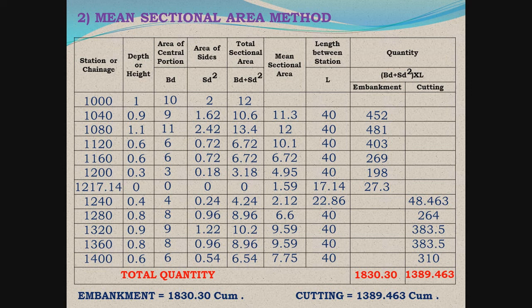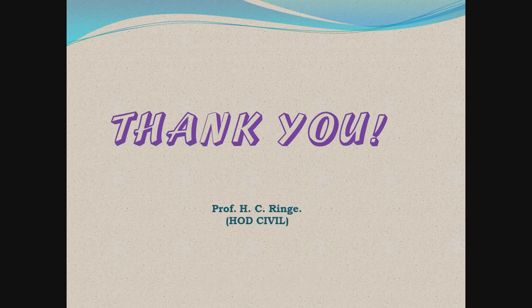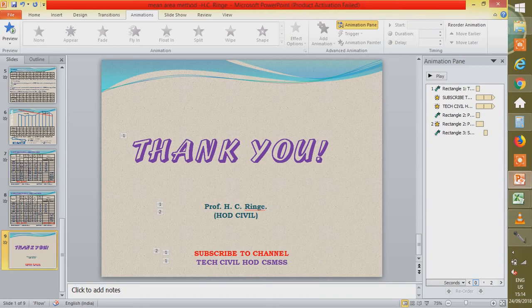So we have solved this problem using the mean sectional area method to calculate the quantity of earthwork in excavation and filling. The final answer is: quantity of embankment = 1830.30 cubic meters, and quantity of cutting = 1389.463 cubic meters. Please like the video, subscribe to the channel Tech Civil HOD CSMSS, and share your feedback on upcoming topics. Thank you very much for watching.